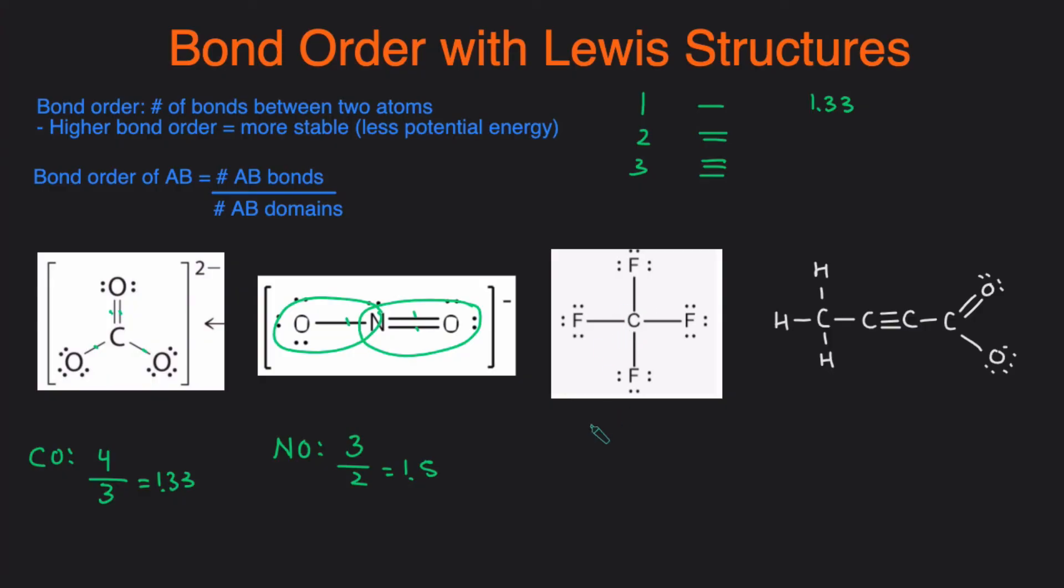So each of these CF bonds are single bonds. So that means the bond order is just going to be one. Or if you want to use the formula, then you'll have one, two, three, four CFs divided by one, two, three, four CF domains, which is just going to be one. So each of these are a single bond, bond order one.